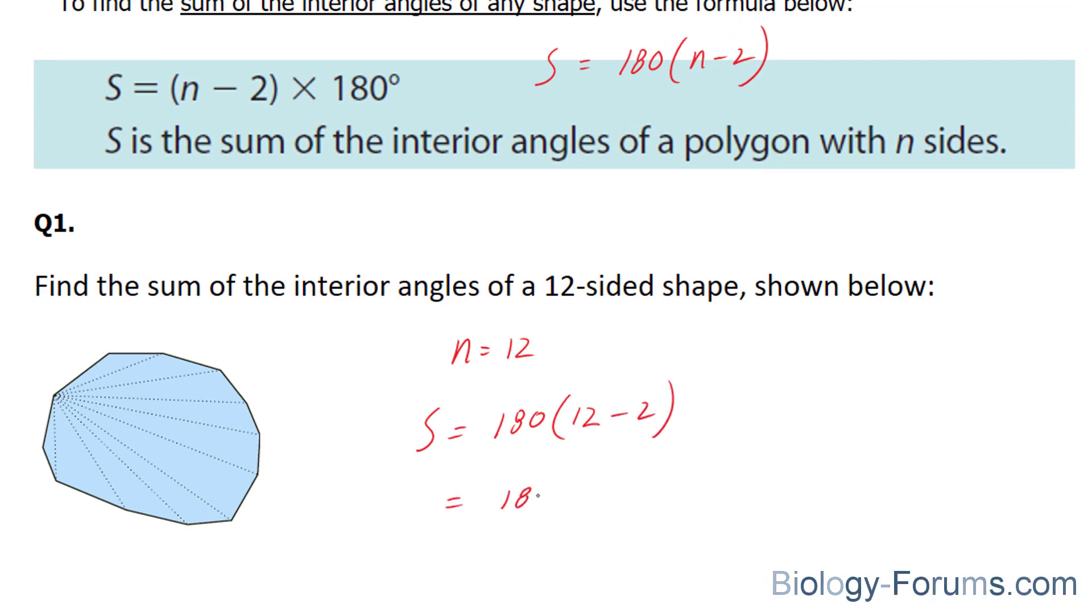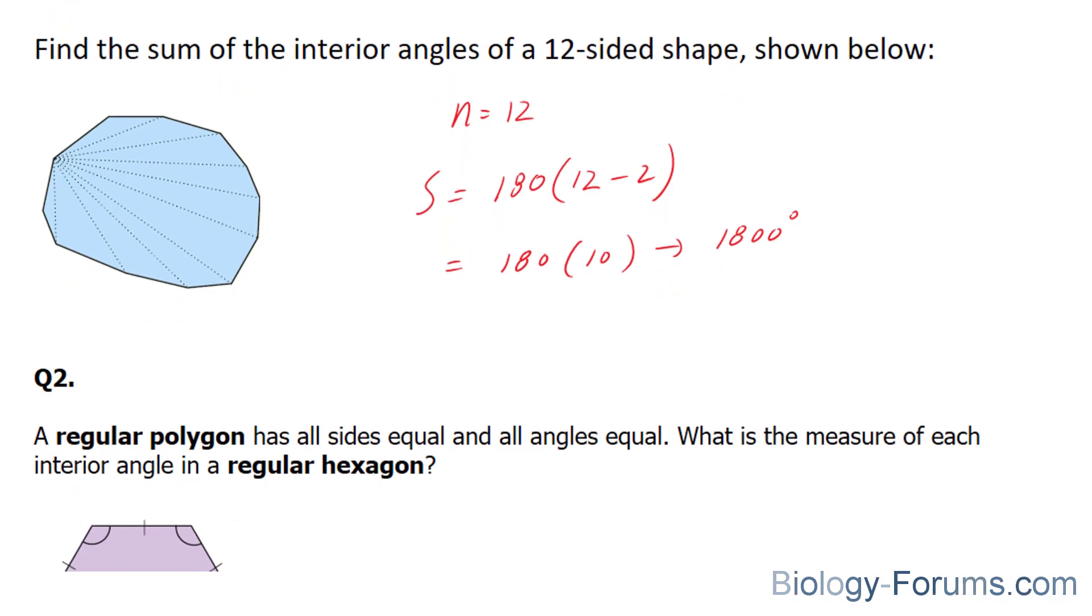And we end up with 180 times 10 is equal to 1,800 total degrees. There you have it. That's question number one.